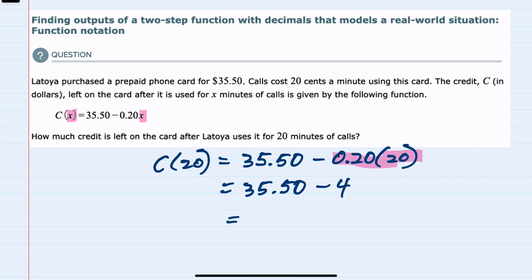We can then simplify: 35.50 minus 4 is 31.50. So after 20 minutes, LaToya's card still has $31.50 credit available.